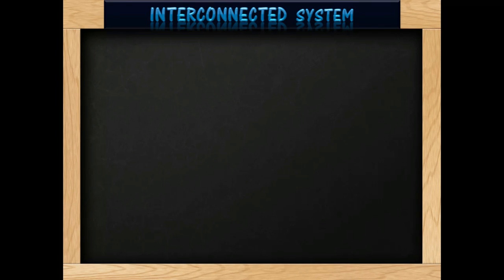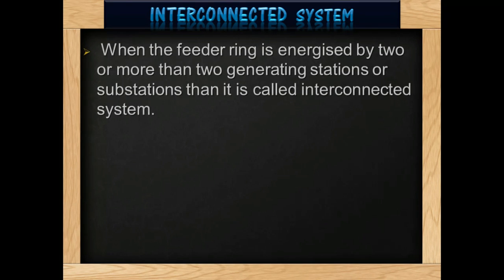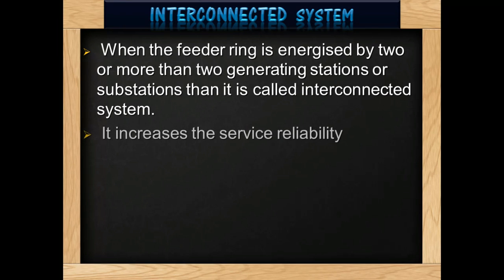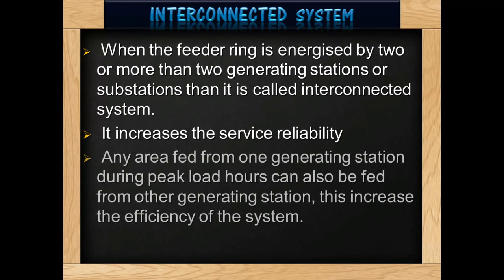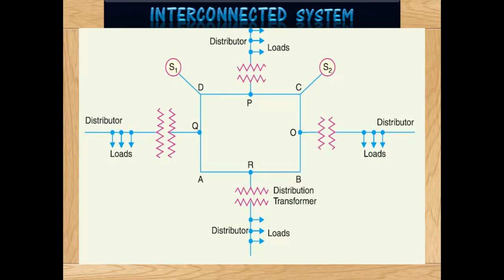Interconnected system: When the feeder ring is energized by two or more generating stations, then it is called an interconnected system. It increases the service reliability. Any area with heavy load on generating stations during peak load hours can also be supplied from other generating stations. This increases the efficiency of the system. The figure shows the interconnected system — it means load sharing from two or more generators.